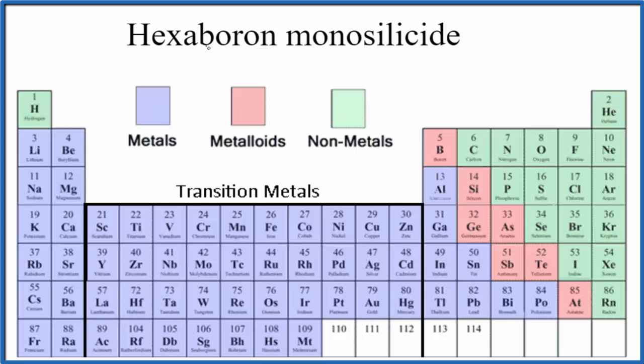To write the formula, the first thing we want to note is we have boron here, and boron is a metalloid. So we have our metalloid here, and then silicide, that's from silicon, that's a non-metal.